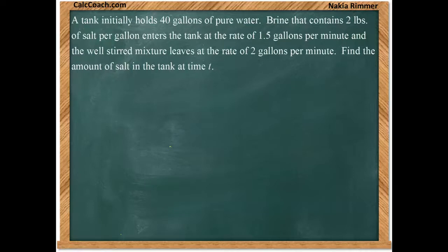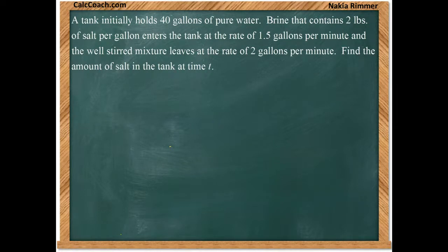A tank initially holds 40 gallons of pure water. Brine that contains two pounds of salt per gallon enters the tank at the rate of one and a half gallons per minute. The well-stirred mixture leaves at the rate of two gallons per minute. Find the amount of salt in the tank at time t.